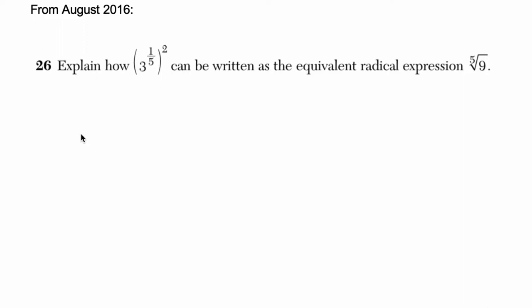Okay, so they want us to explain how 3 to the 1/5 squared can be written as the equivalent radical expression. This is the 5th root of 9, so some number times itself 5 times that equals 9.